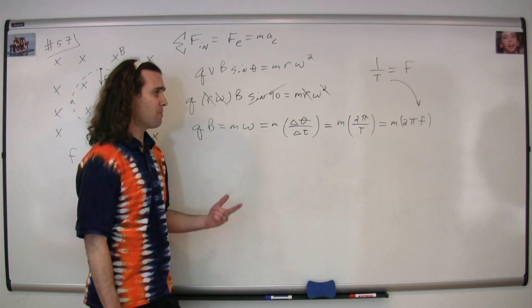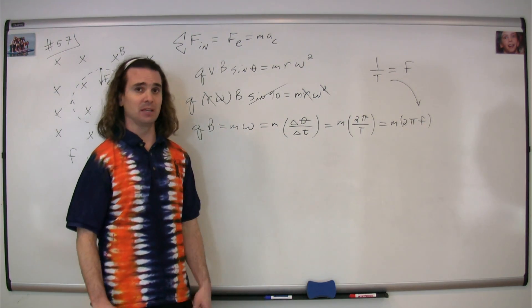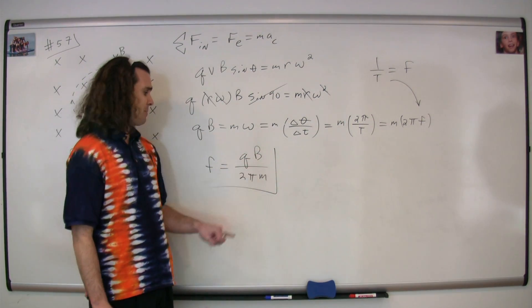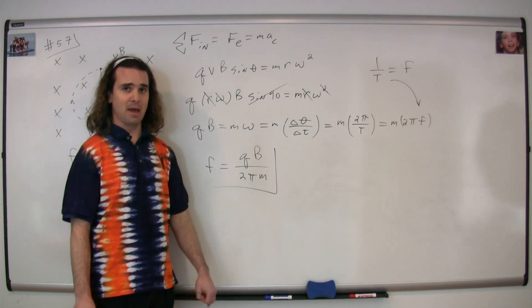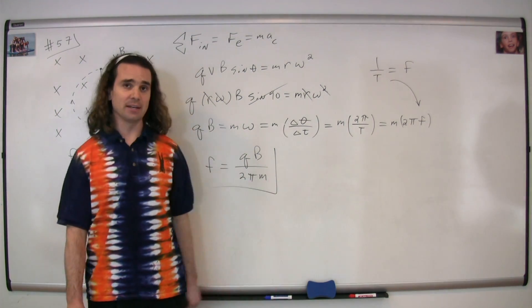We know that one over the period is equal to the frequency, therefore we now have on the right the mass times two pi times the frequency. Therefore, the frequency is going to be equal to charge times the magnetic field divided by the quantity two pi times the mass. In other words, the frequency has absolutely nothing to do with the radius.